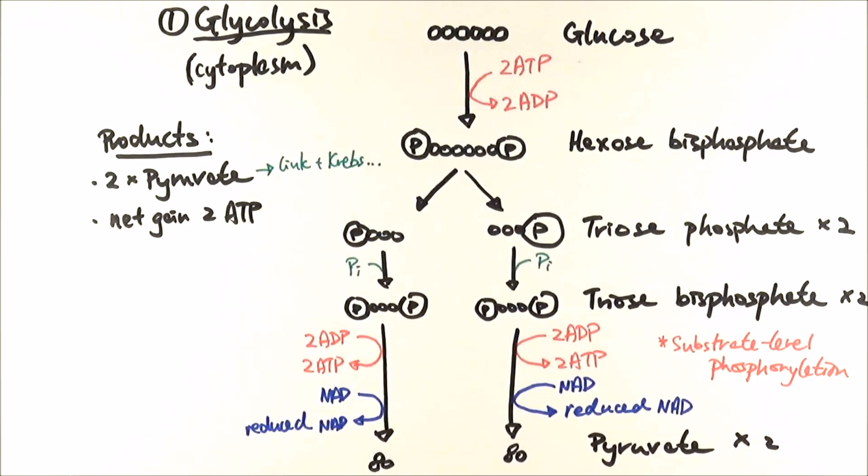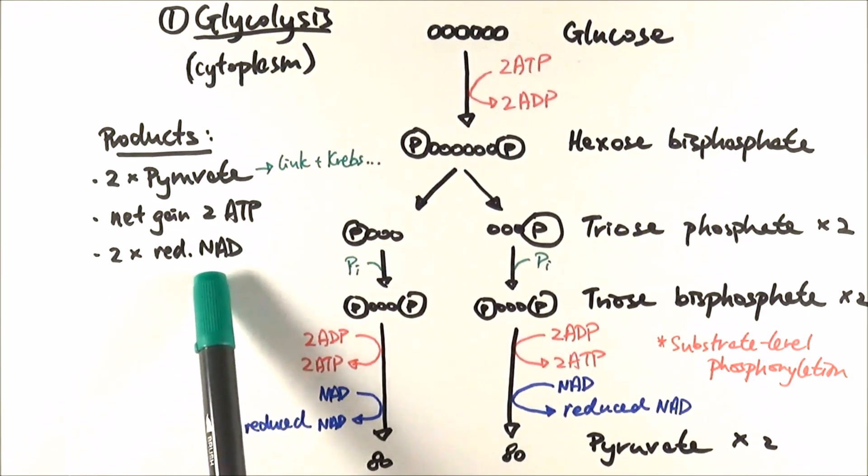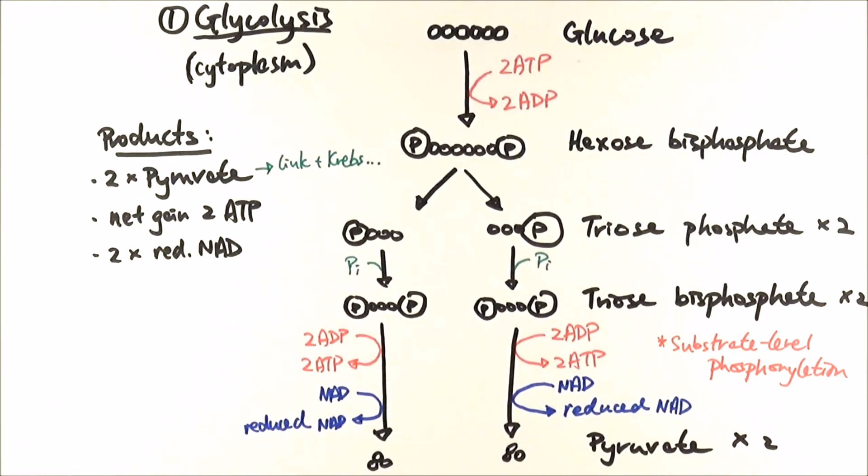The next thing we need to consider will be the reduced NAD, and that is very important because it is the one that will enter the final stage to oxidative phosphorylation. Without reduced NAD being made, you can only make a maximum of two ATP here.